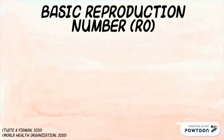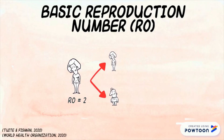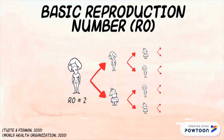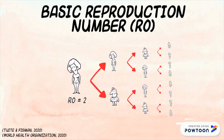Scientists often use the R0 value to describe how infectious a disease is. Also known as the reproduction number, R0 is the number of cases, on average, an infected person will cause during their infectious period.